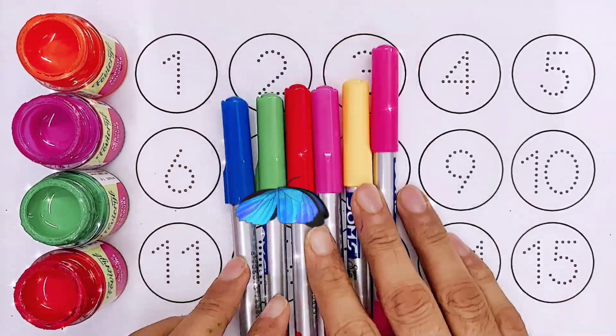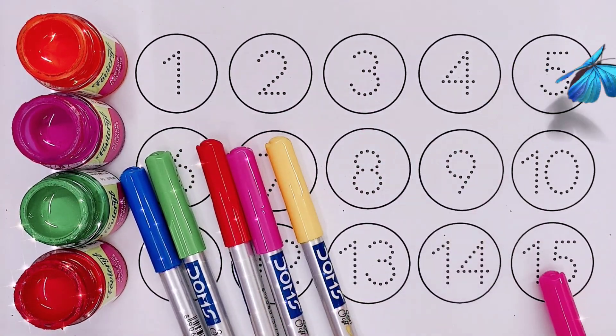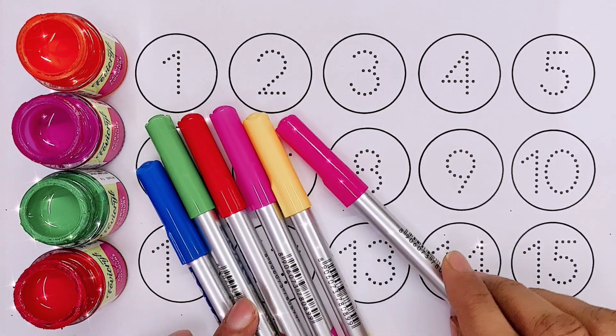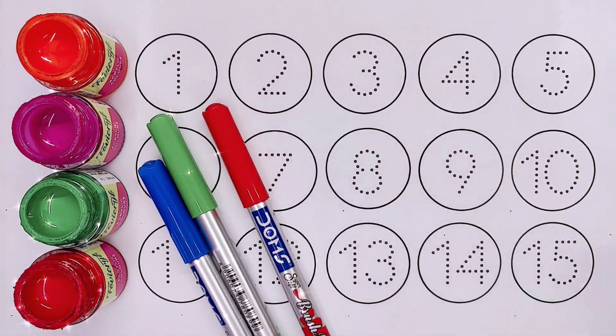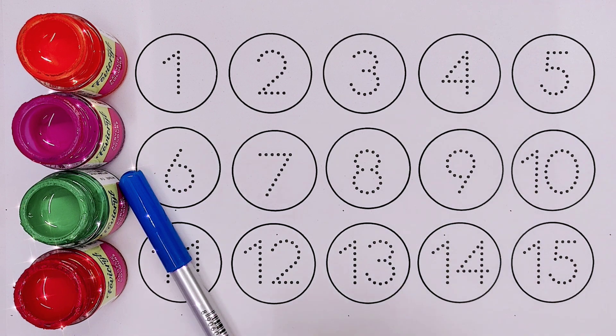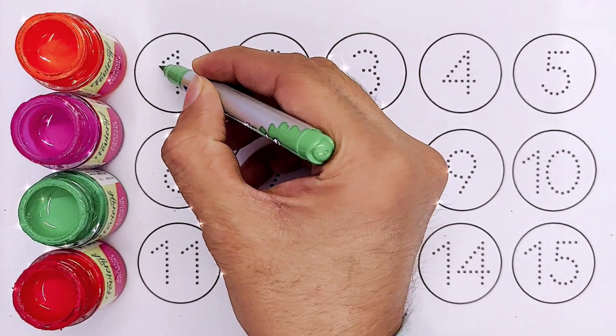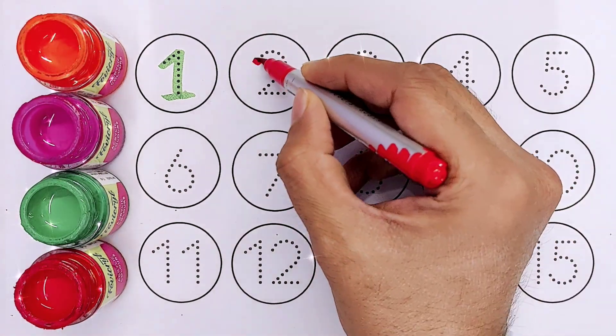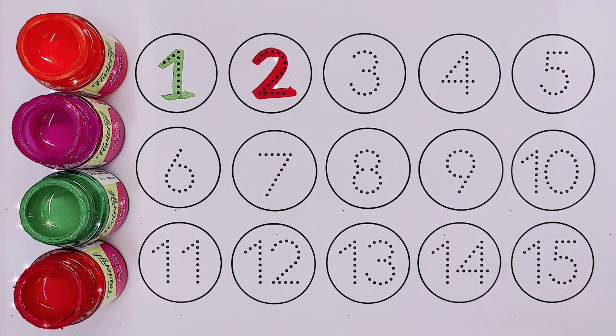Hello kids, welcome to our channel Gappu Study Glass. Today we are learning one to fifteen counting. Let's name some colors. This is pink color, yellow color, dark pink color, red color, green color, blue color. Let's start the video. One, one, two, two, three.